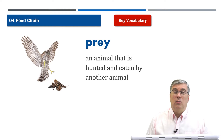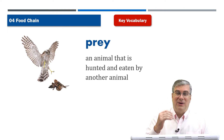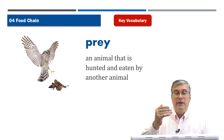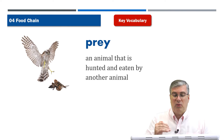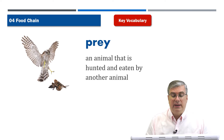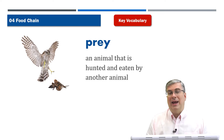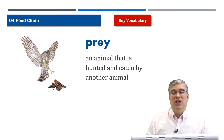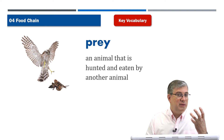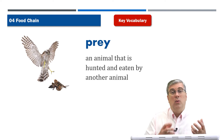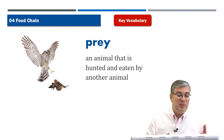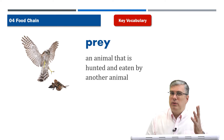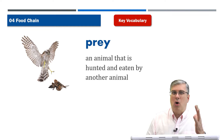The opposite of predator is prey. Prey is the animal that is hunted and eaten by another animal. In the previous picture we saw a cheetah chasing a warthog — the cheetah was the predator, the warthog was the prey. In this picture we see an owl, which is a very strong predator.